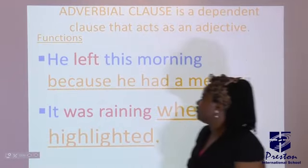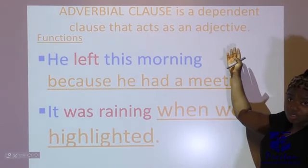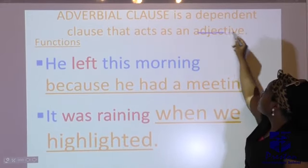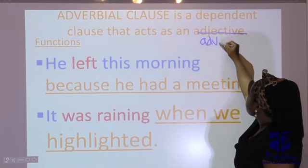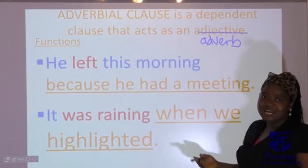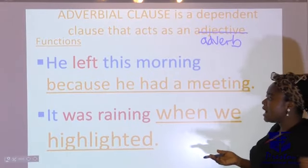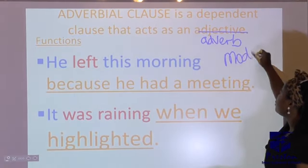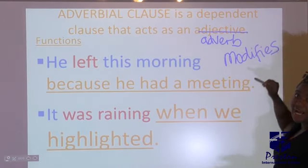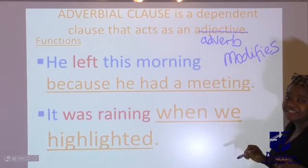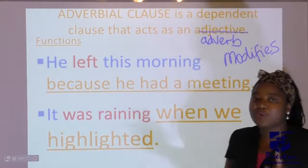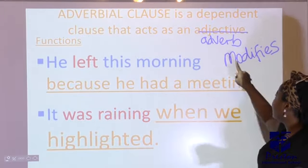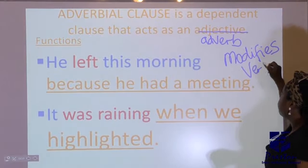Now let's go to the adverbial clause. It's a dependent clause that acts as an adverb. What does an adverb do in a sentence? It modifies the verb. I want us to make sure we use these words in context: an adjective qualifies, an adverb modifies. This is why the syllabus is important — you use vocabulary that is specific. An adverb modifies the verb.